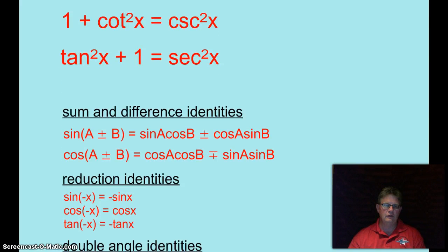Okay, reduction identities. Sine of negative x equals negative sine x. Cosine of negative x equals cosine x. Tangent of negative x equals negative tangent of x. That kind of shows that sine and tangent are symmetric about the origin and cosine is symmetric about the y-axis.